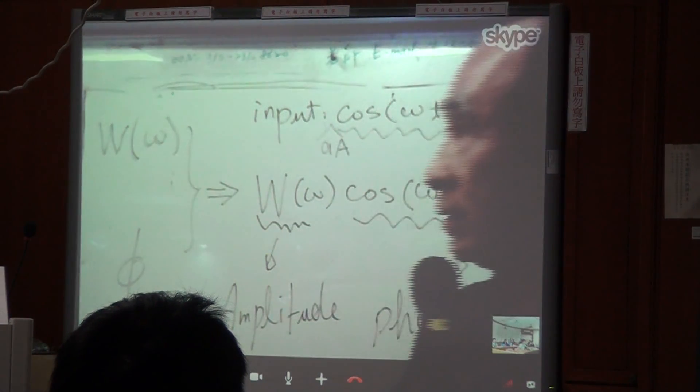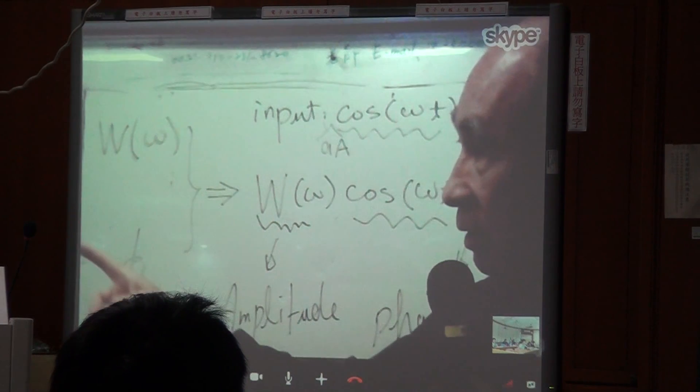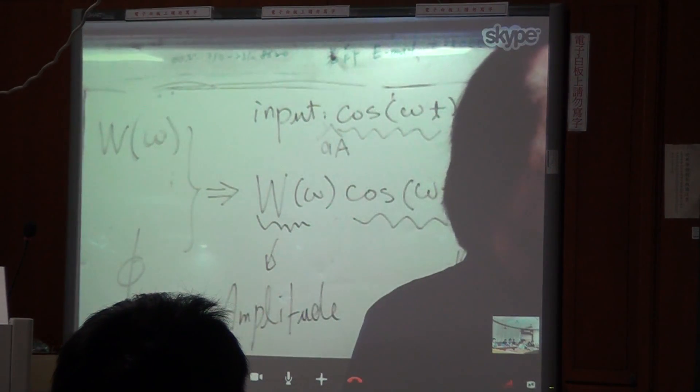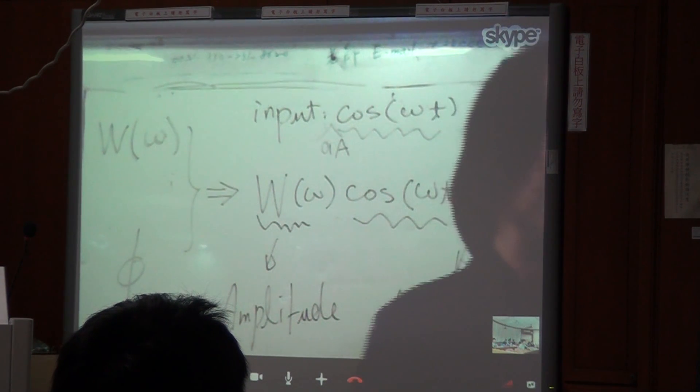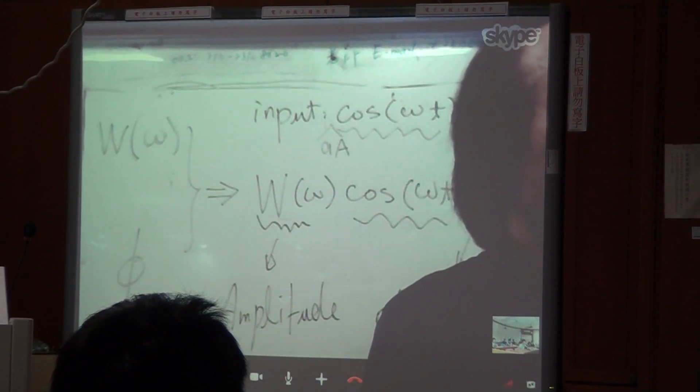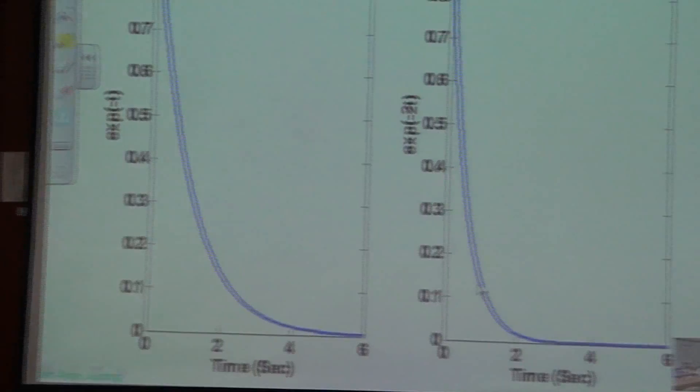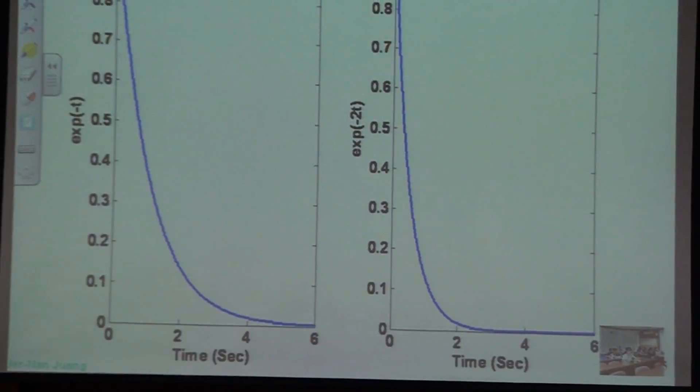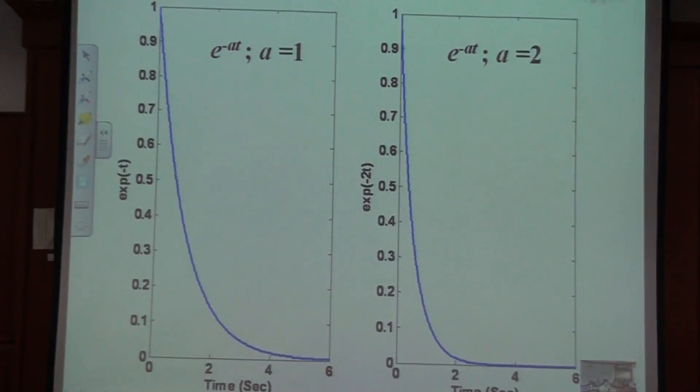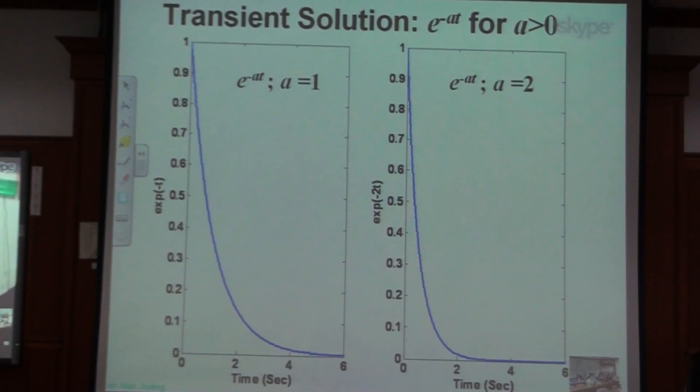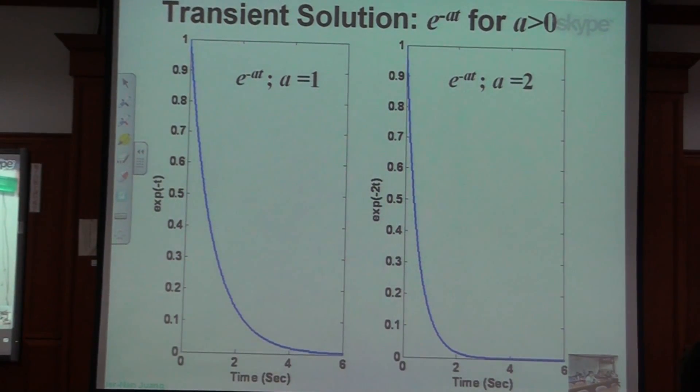So if A equal to 1, the transient solution would be decaying that way. If A equal to 2, and this is minus, then the transient will decay quickly. So the transient solution would depend on your system A. They don't depend on any input. This is nothing to do with input. The transient solution is nothing to do with input.